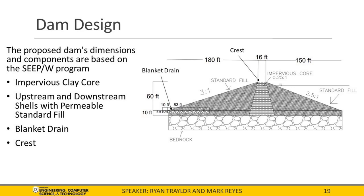The proposed dam's components include the following. The impervious clay core is located in the middle; its function is to hold free water and resist seepage water pressure. The upstream and downstream shells of permeable sand fill support and protect the clay core. The upstream pervious shell affords stability against rapid drawdown, and the downstream pervious shell acts as drain control for seepage into the blanket drain. The blanket drain is located near the downstream toe and intercepts water traveling through porous soils. The crest is the uppermost part of the dam, providing access to vehicles along the roadway.